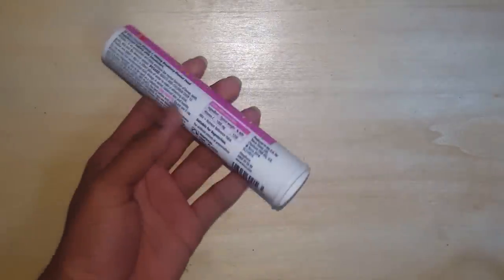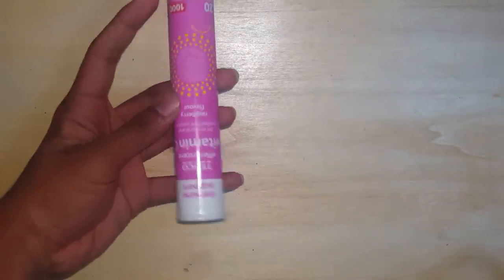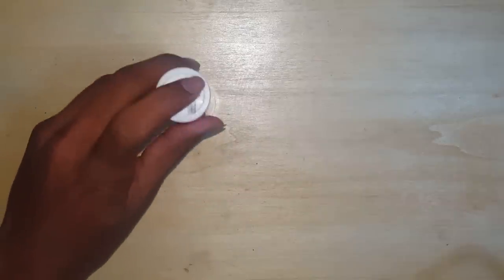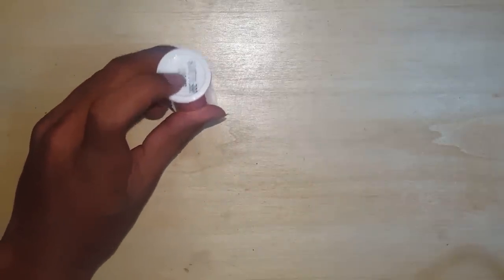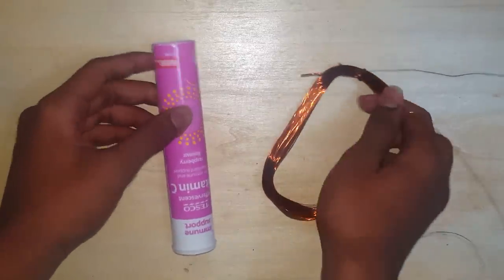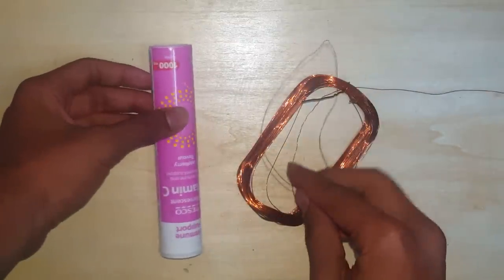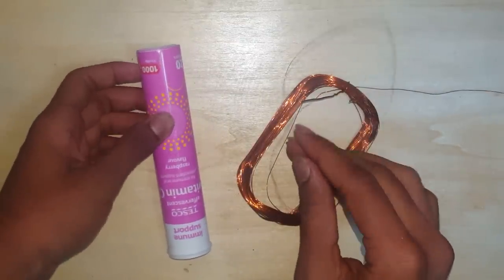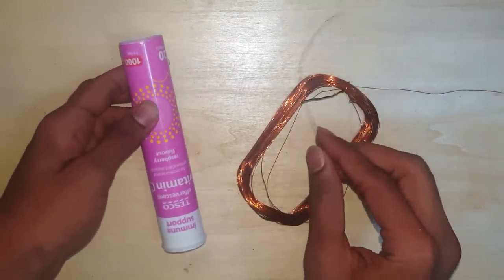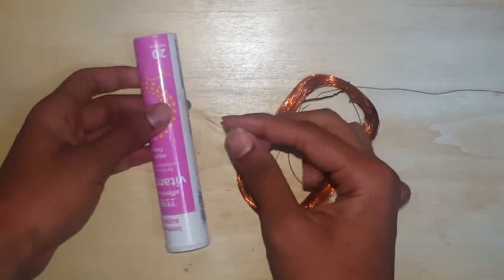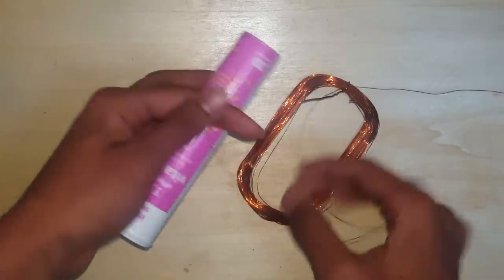To make this secondary coil, you're gonna need a PVC tube or any plastic. The length is about 14 centimeters and the diameter is 2.6 centimeters. Then you're gonna need some enameled copper wire. I'm using 27-gauge copper wire. This wire may look like it's bare wire, but it's not. It's insulated with a thin layer of insulation. Now we're gonna wind it on this plastic.